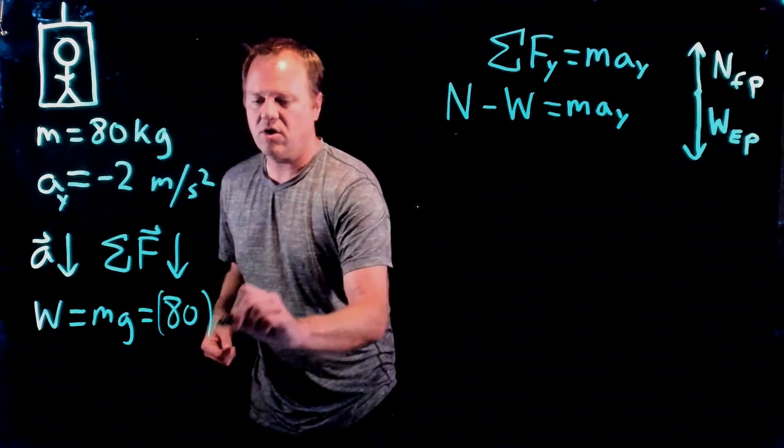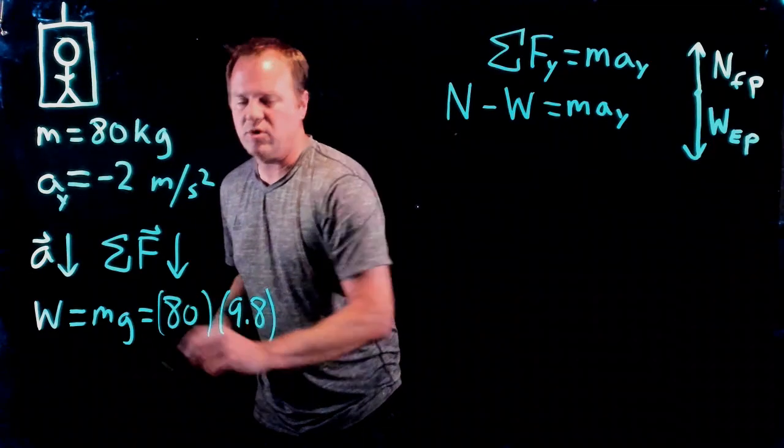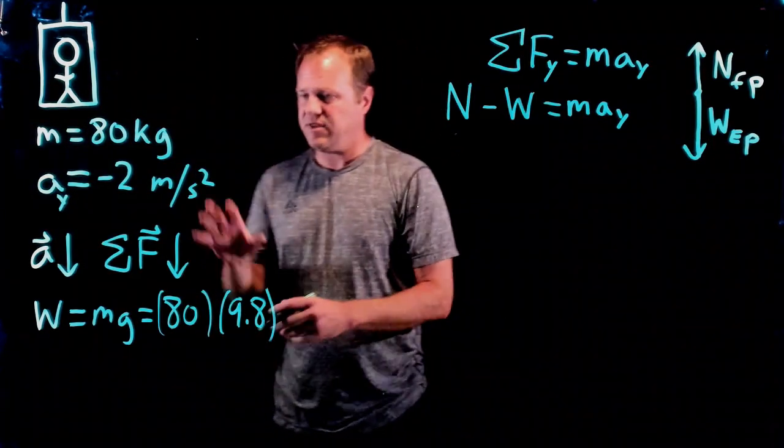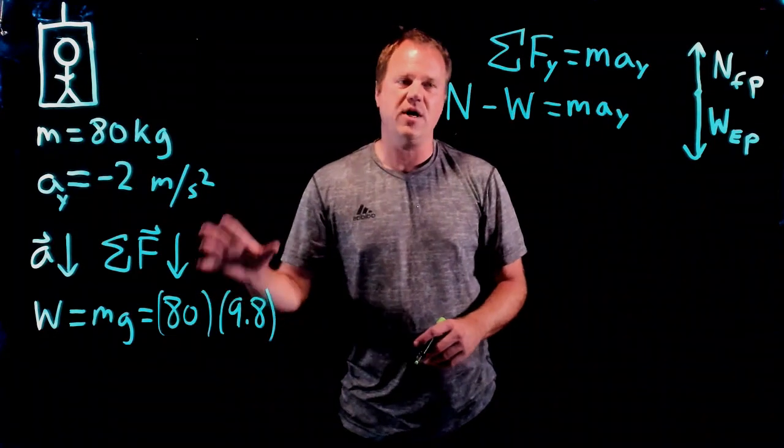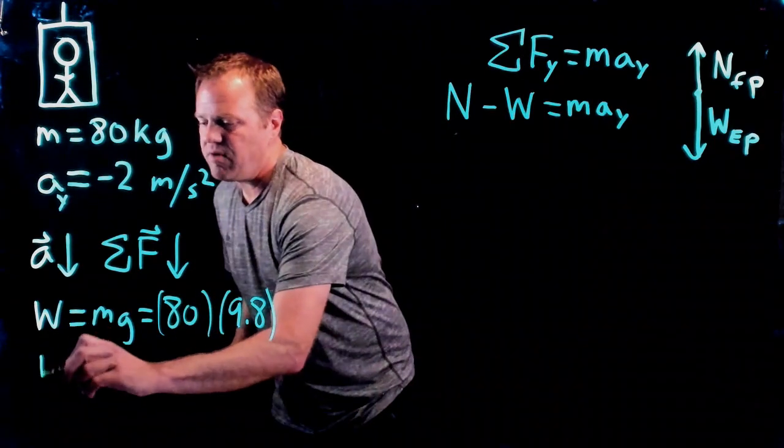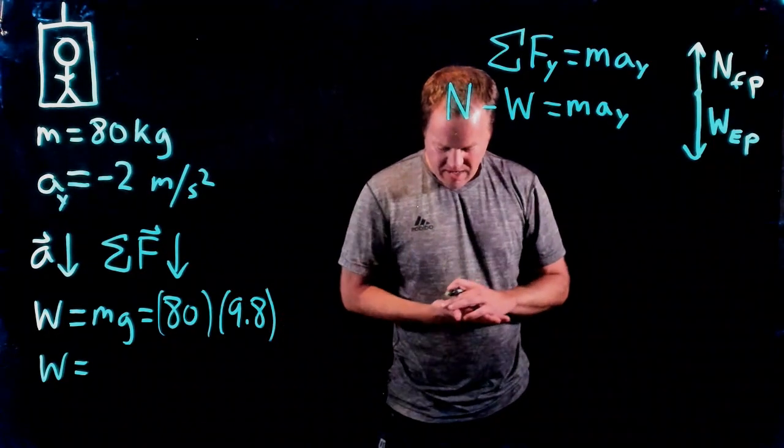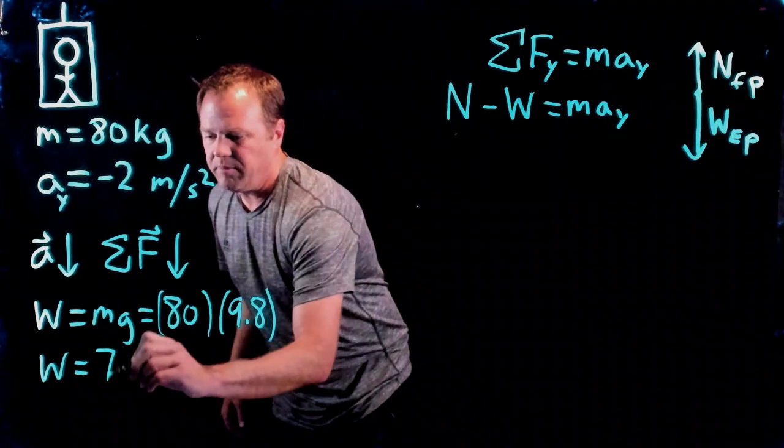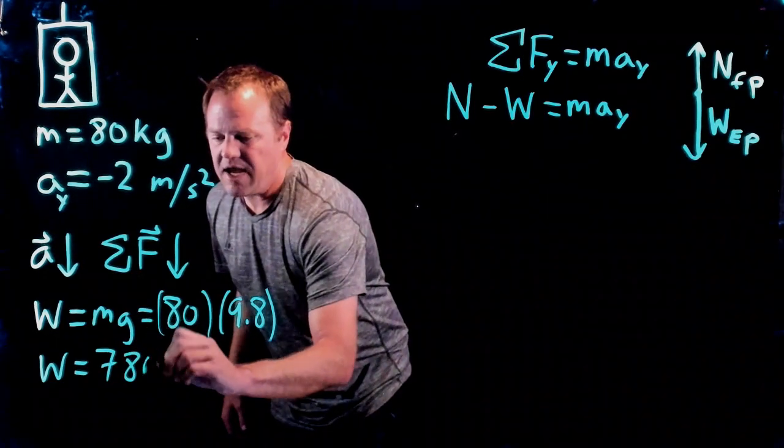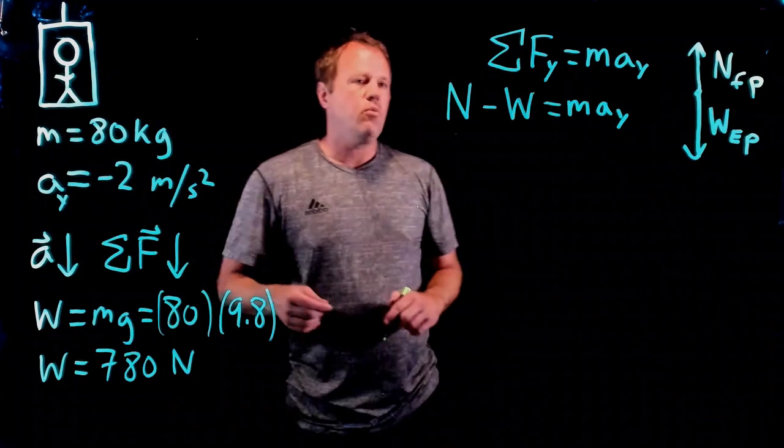Remember, g is always a positive number—it's not the acceleration, it's the magnitude of the free fall acceleration. It helps you calculate the weight force. I throw those numbers into my calculator and get, rounding a little bit, 780 newtons. I'm halfway there—I've got the weight force, now I just need to calculate the normal force.